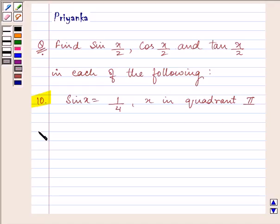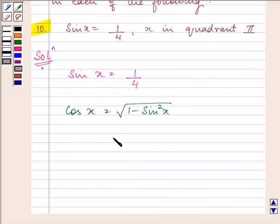Let us proceed on with our solution. Since in the question we are given the value of sin x, first of all we'll be finding out the value of cos x and it will be √(1 - sin²x) = √(1 - (1/4)²).